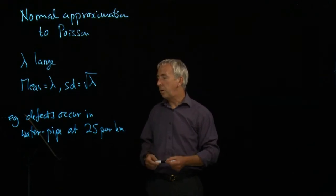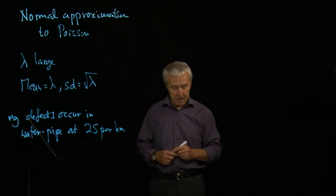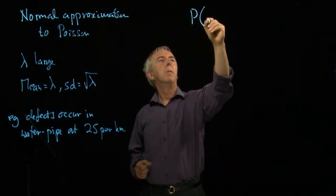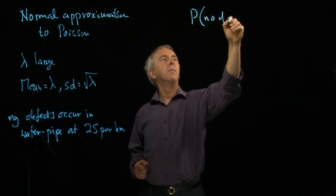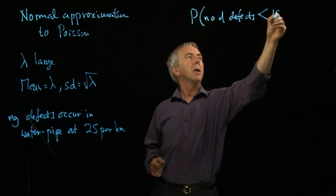So we want to find, for example, the probability that a particular kilometer has less than 18 defects. Number of defects is less than 18. So that's the probability.